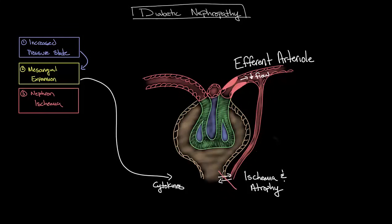As you can see, there are many different mechanisms that contribute to the progression of kidney failure in individuals with diabetes mellitus. However, it's important to note that they are all directly associated with the underlying hyperglycemia, and therefore the progression towards kidney failure can be slowed or potentially even prevented if the underlying diabetes is well controlled.